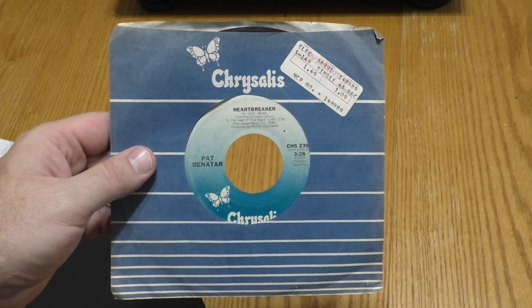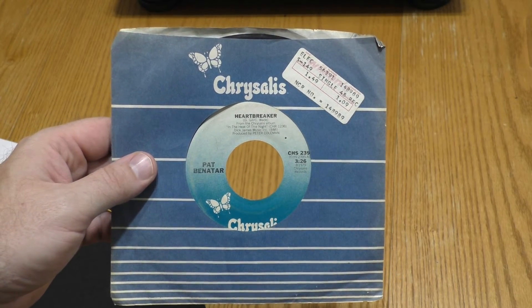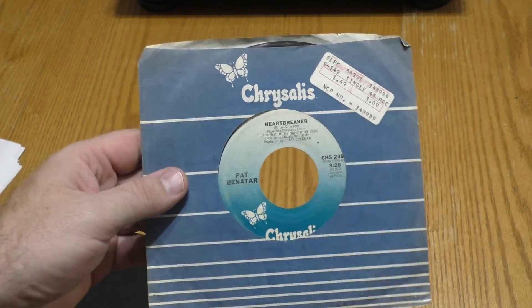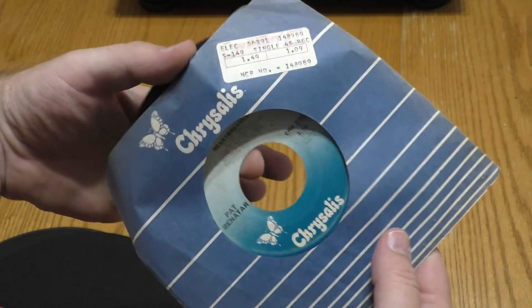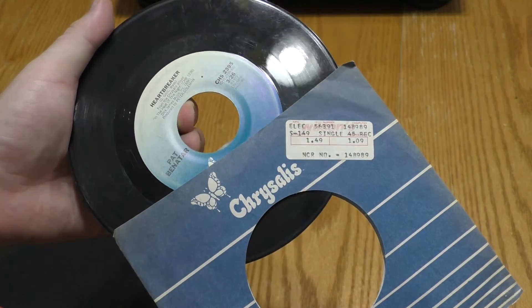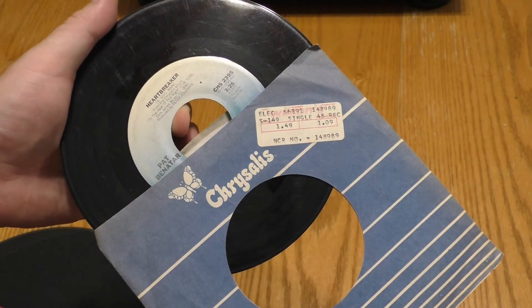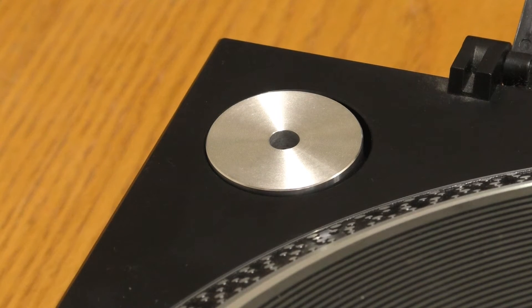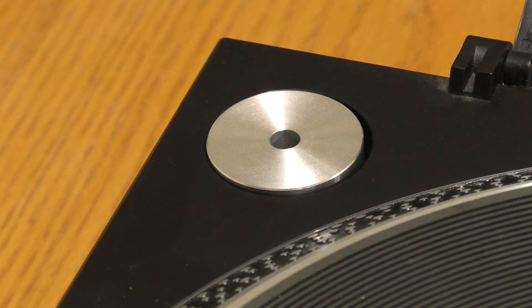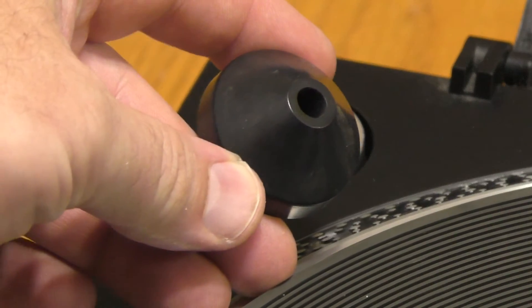I primarily listen to 33 and a third RPM LP records, but occasionally I like to listen to a 7 inch 45 RPM single. The hole in the middle of these records is 1.5 inches, so it is important to have a spindle hole adapter for playback. Most turntables come with this accessory, but if yours does not, adapters are affordable.